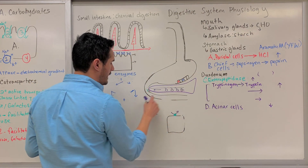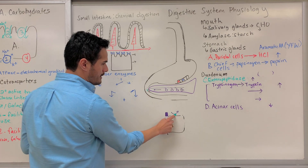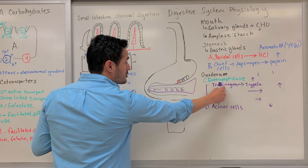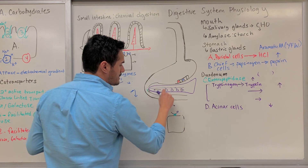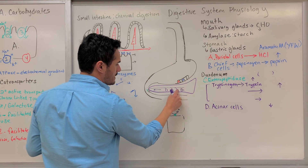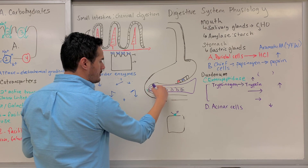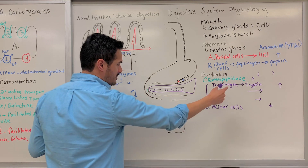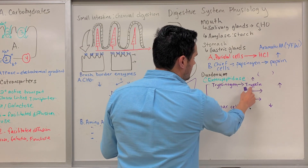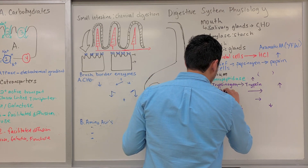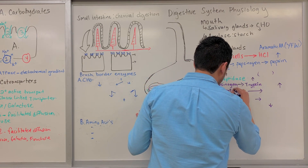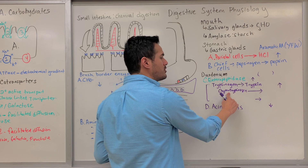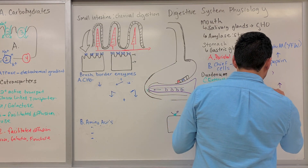Enteropeptidase is located here within the duodenum. Trypsinogen comes from the acinar cell, going through the pancreatic duct, and then getting here into the duodenum. From there, we convert trypsinogen into trypsin. Then trypsin is responsible for activating what's known as chymotrypsinogen. So trypsin converts chymotrypsinogen into chymotrypsin.